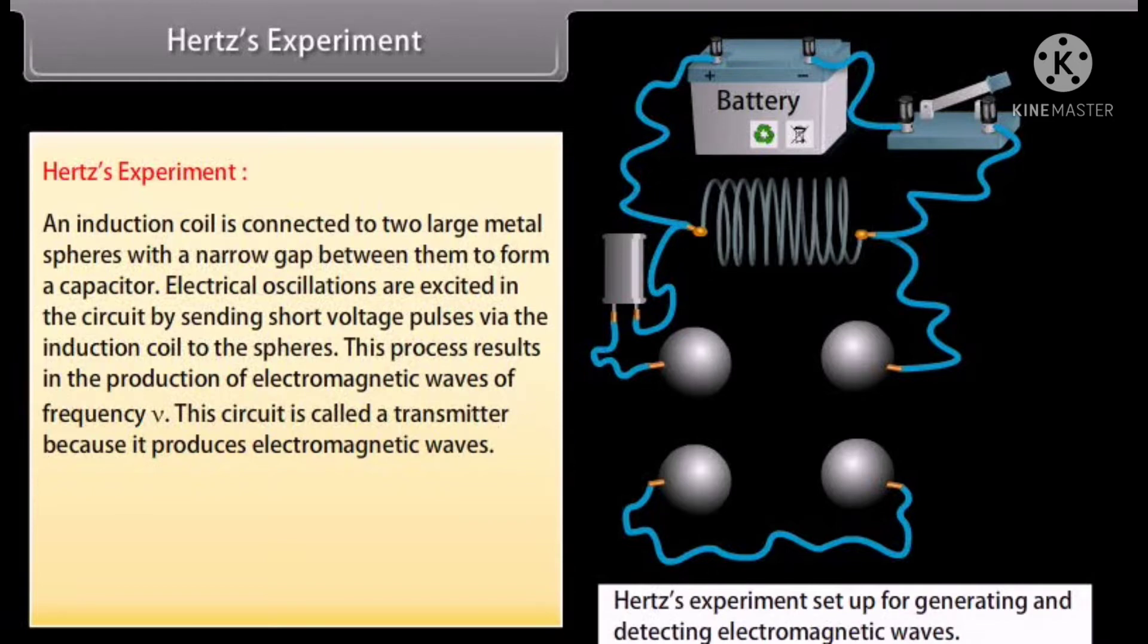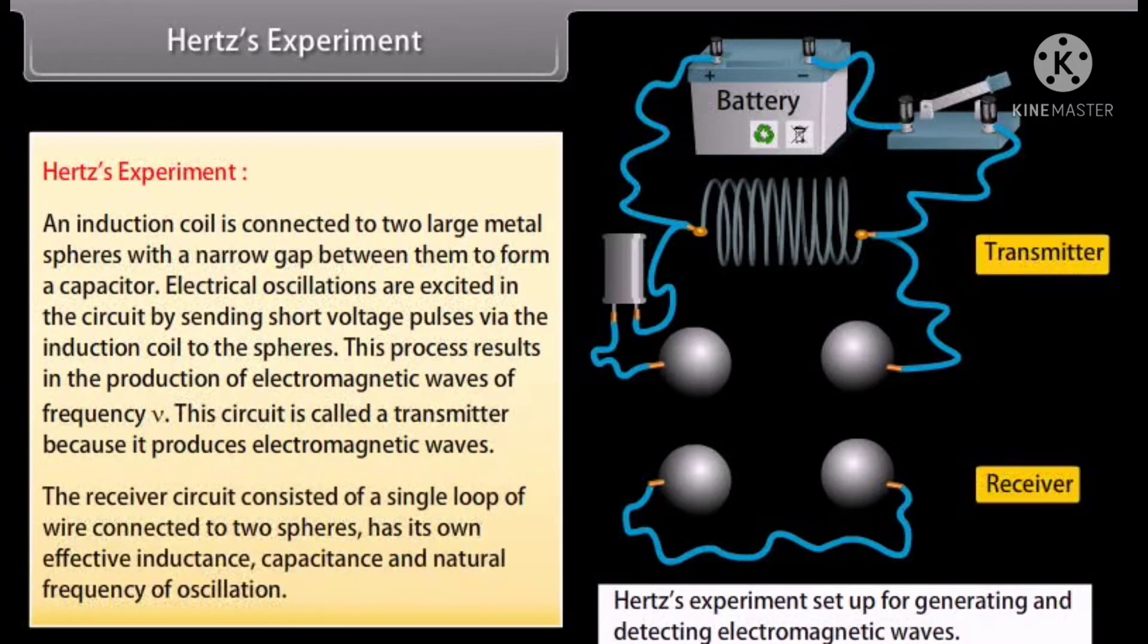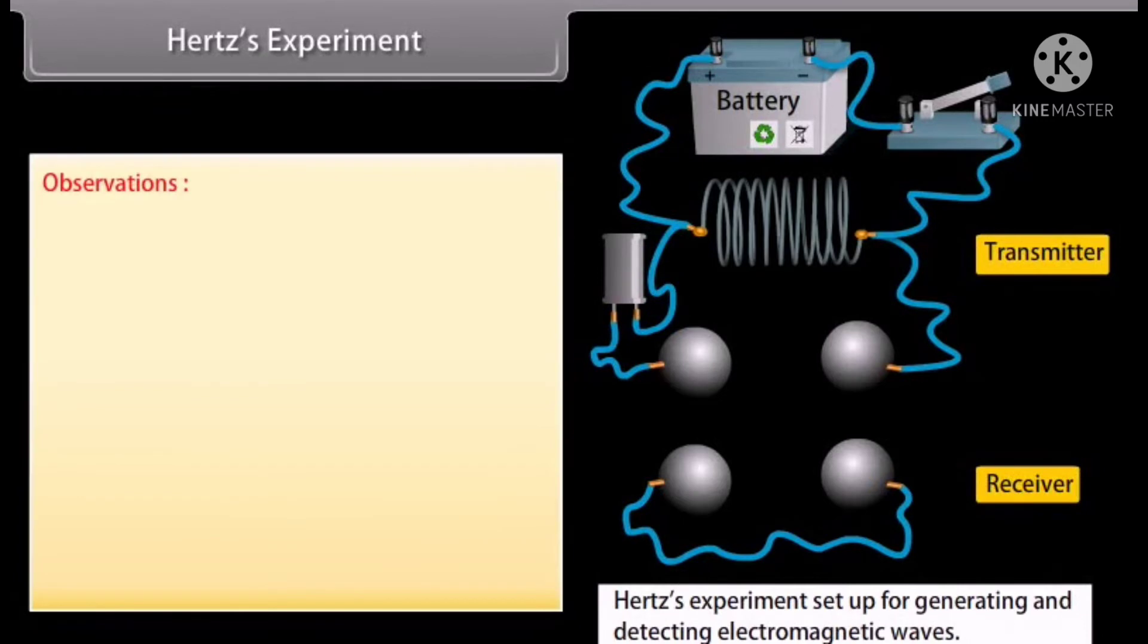This process results in the production of electromagnetic waves of frequency nu. This circuit is called a transmitter because it produces electromagnetic waves. The receiver circuit consisted of a single loop of wire connected to two spheres has its own effective inductance, capacitance and natural frequency of oscillation.